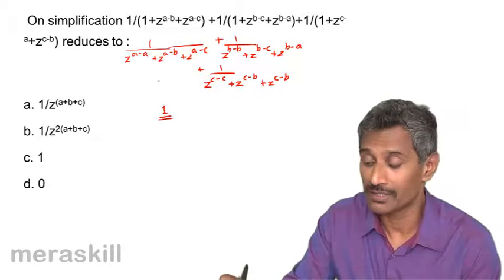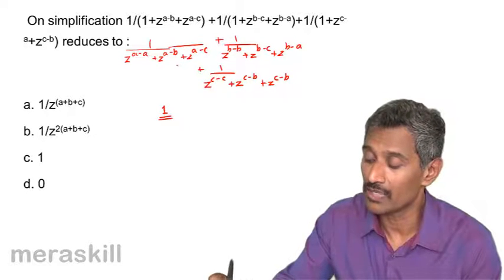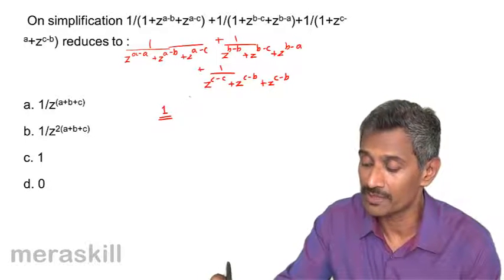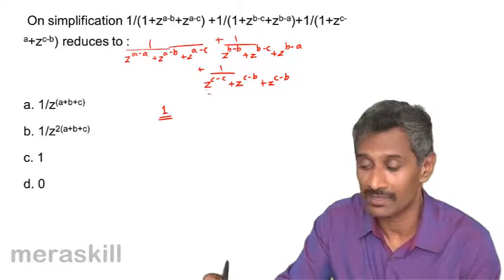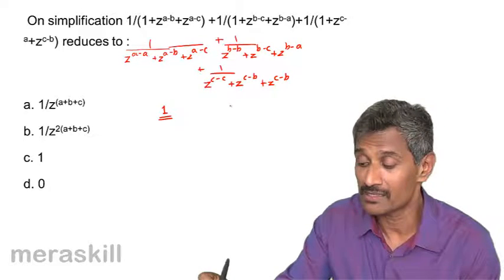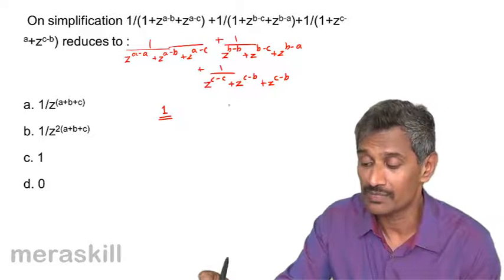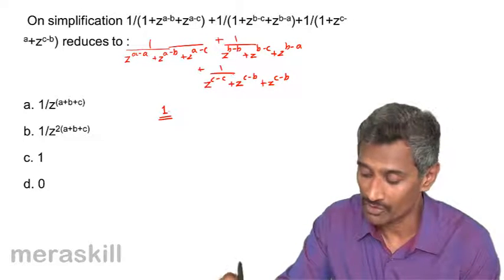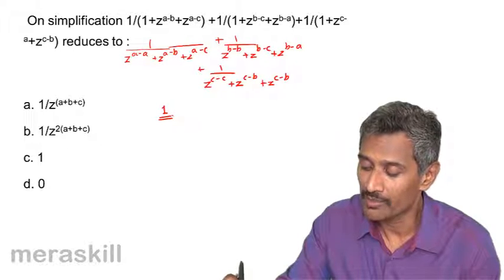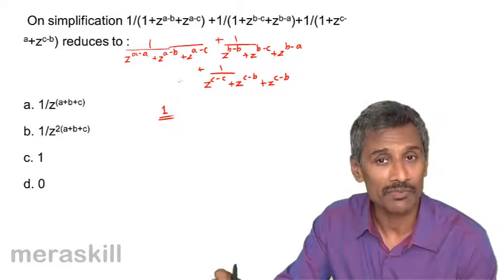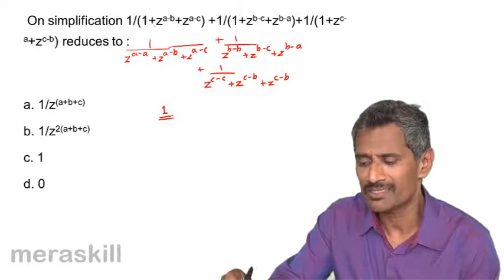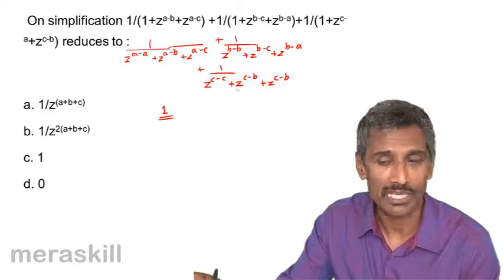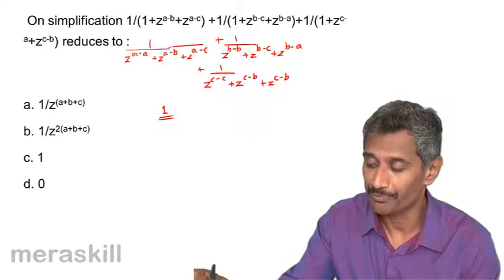It eventually turns out to be z raised to minus a plus z raised to minus b plus z raised to minus c, upon the same thing, so it's 1. It's only that the names of variables have been changed — it is the same problem.